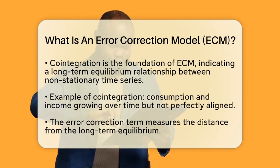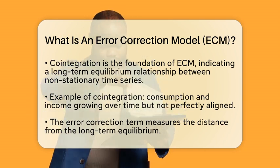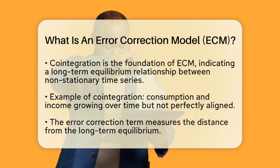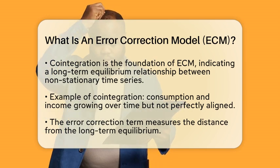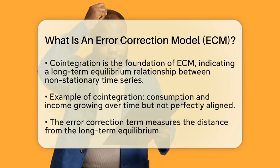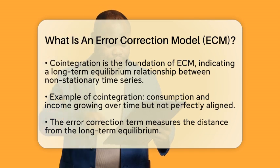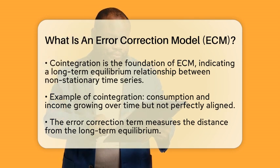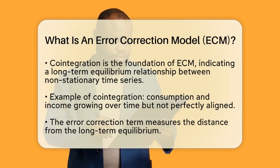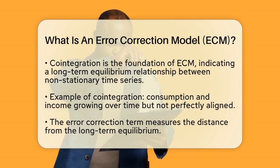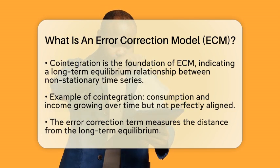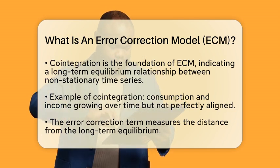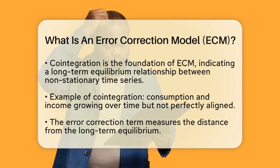An important part of the Error Correction Model is the Error Correction Term. This term measures how far the current state is from the long-term equilibrium. If consumption is lower than expected based on income, the Error Correction Term predicts that consumption will increase to return to that equilibrium.